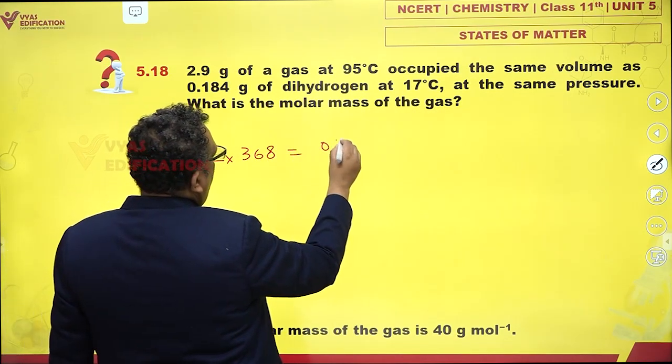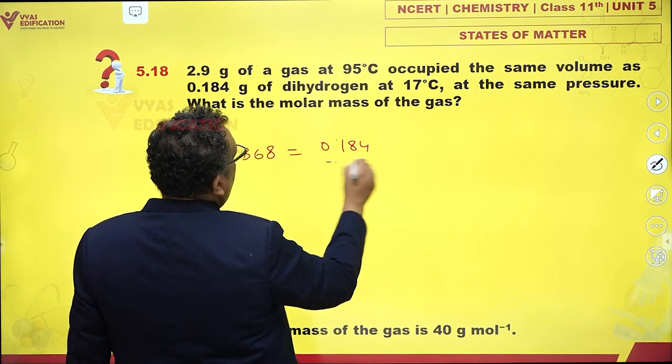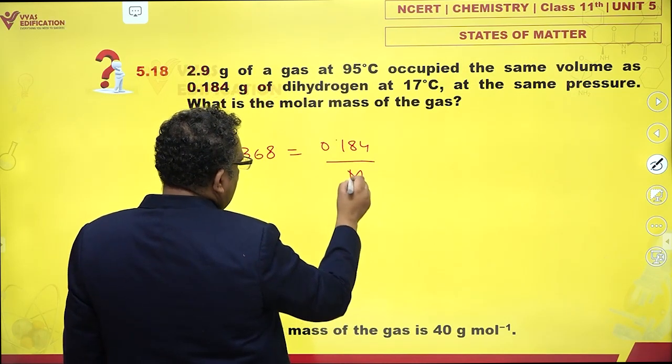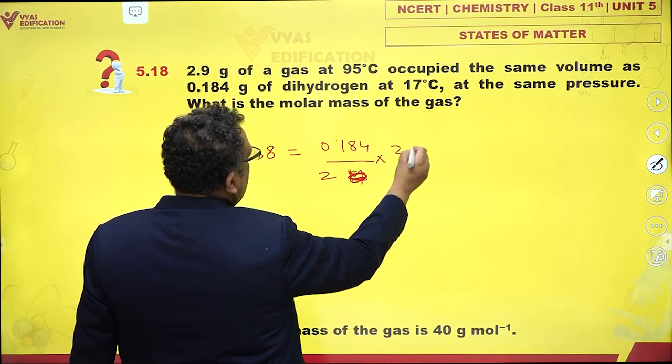Is 0.184 grams of hydrogen. Molar mass of hydrogen is 2, and temperature is 290.